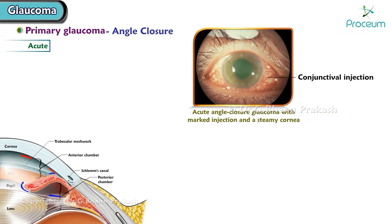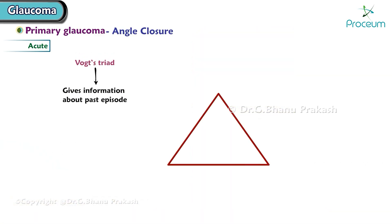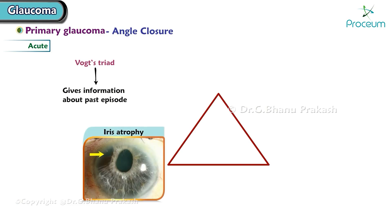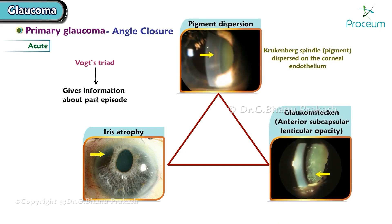The eye shows conjunctival injection, steamy cornea, vertical oval mid-dilated non-reacting pupil, and the eye is stony hard. The Vogt triad gives information about a past episode of acute angle closure glaucoma. The presence of iris atrophy, pigment dispersion, and glaukomflecken suggest a past attack.